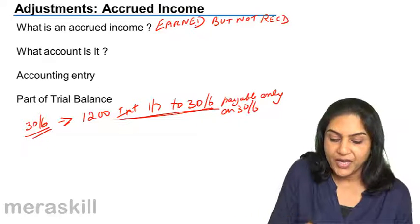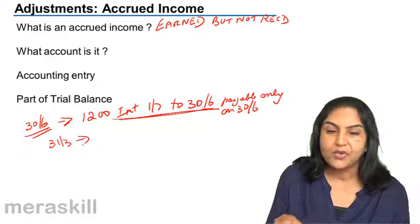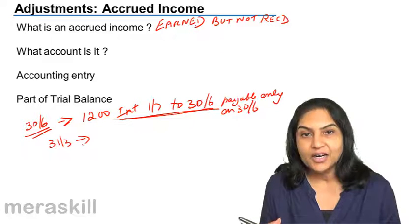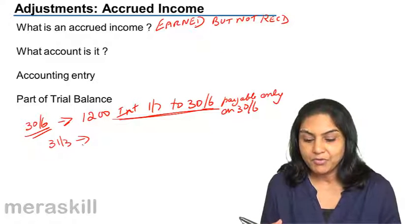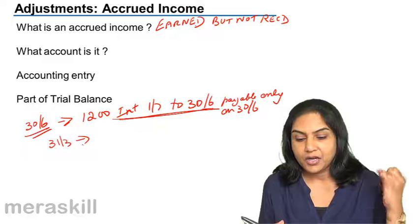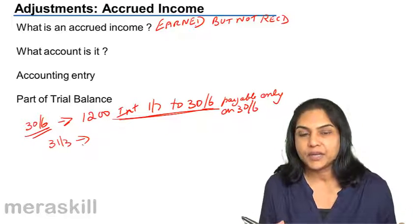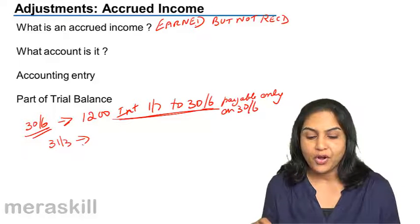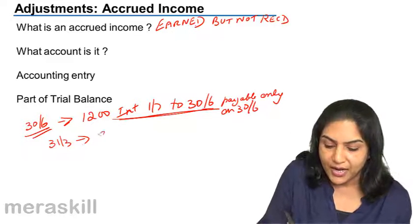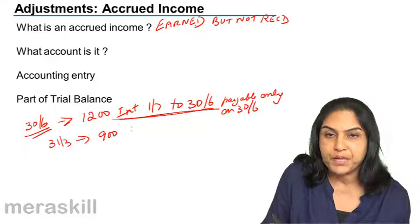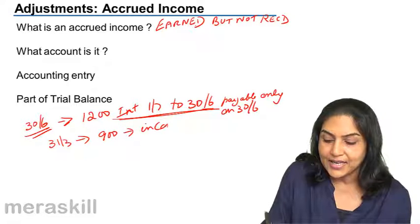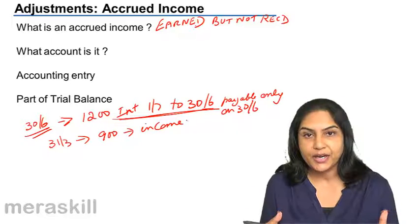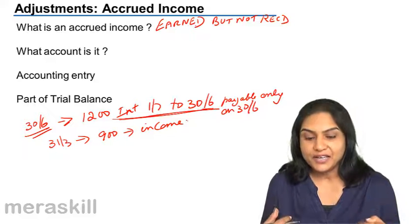When we close our books on 31st March, we find no income has been received. However, we have earned income from July, August, September, October, November, December, January, February, and March — for 9 months. So on 31st March, 900 rupees must be credited as income, but money has not come in. Therefore, it is a receivable.